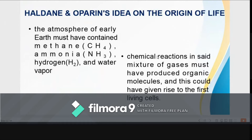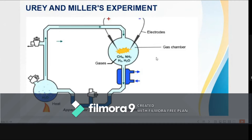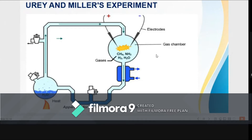Around 30 years later, American chemist Harold C. Urey proposed a model of the atmosphere of early Earth similar to that conceived by Oparin and Haldane. In 1952, he suggested an experiment to explore the origin of life under the conditions of this model of Earth's primordial atmosphere. In 1953, Stanley Lloyd Miller, another American chemist, performed such an experiment which became known as the Miller-Urey experiment.